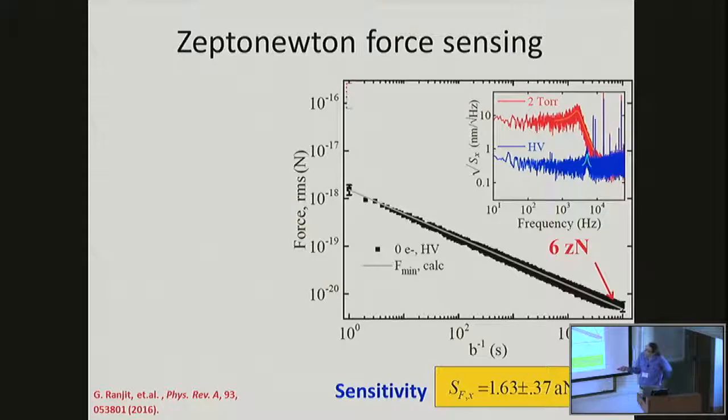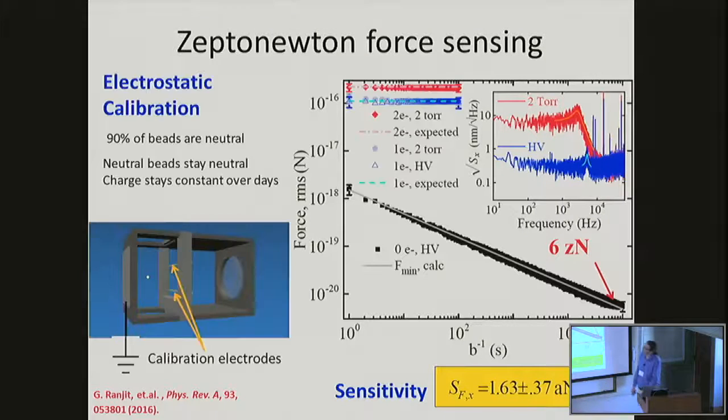Here is some force-sensing data with the system. I'm showing the force as a function of averaging time. We start off with a sensitivity around an attonewton per root hertz. This is limited mainly by technical noise. We think fundamentally we could be about a factor of 10 better than that. We can average for a long time and show that our system is actually fairly quiet. We can average down to levels of the zeptonewton or 10^-21 newton force range, which is starting to be useful now for these gravitational experiments. This is the spectral density showing the cooling that we apply to the system.